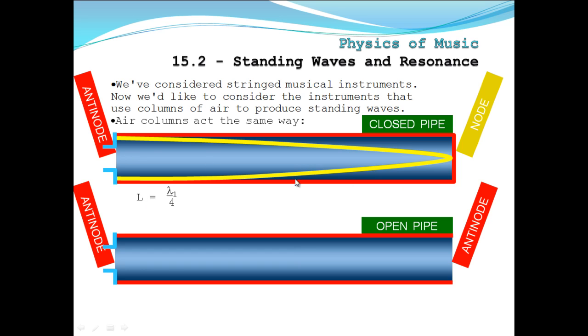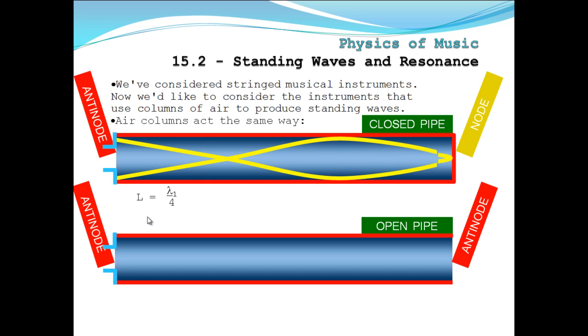Now the length of this pipe equals one quarter of the wavelength. This is only a quarter of the wavelength. Disregard this bottom half right now. This is only one quarter of a wavelength. So you find the length of the pipe if we know the wavelength and how many nodes, anti-nodes are in it. And that would be the first frequency, hence the one at the bottom.